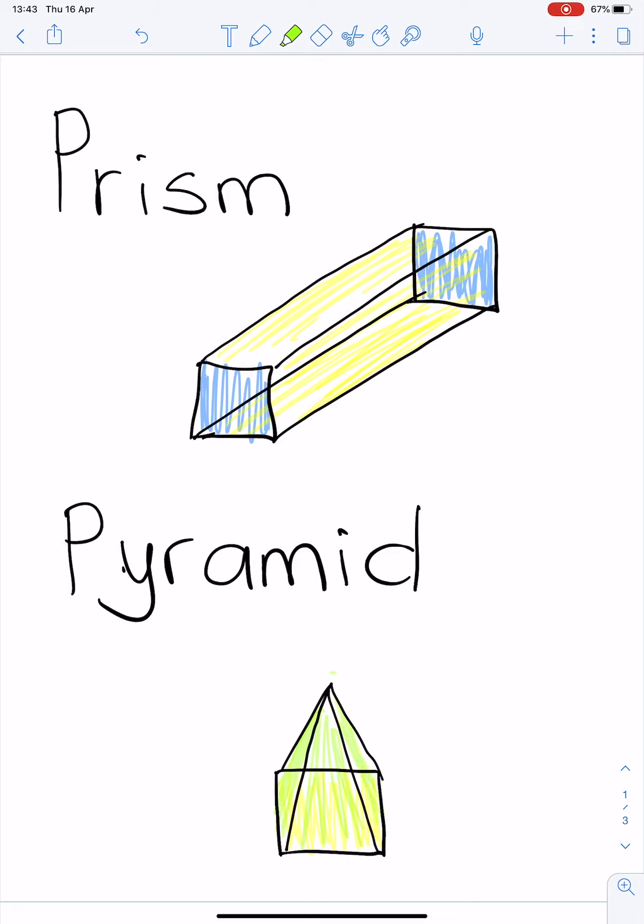And it comes to one point. All the triangles come to one vertice. The prism is joined by rectangles and has two identical faces. The pyramid is joined by triangles which come together in a point.